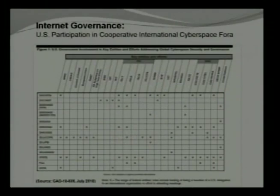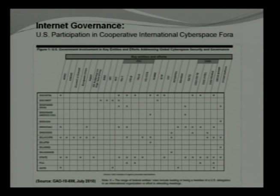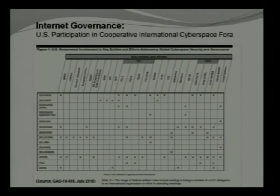Under internet governance, I'd point you to a GAO report — GAO 10-606 — that came out last July. It does a very good job giving about a one- or two-paragraph description of each of the major international and multinational organizations working with the governance of various aspects of cyberspace. Some cover actual items like naming domains, others establish common communication protocols. Some are under the UN charter; others are under other organizations.